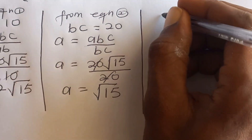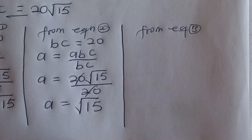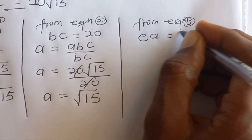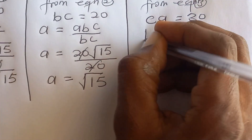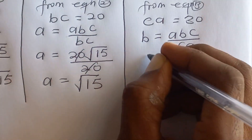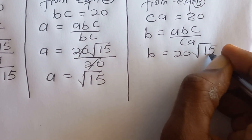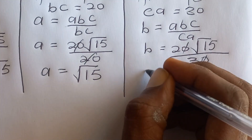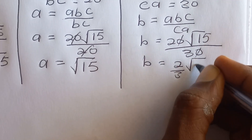From equation 3, which is ca equals 30, we find b. We say b equals abc divided by ca, so b equals 20√15 divided by 30, which gives us b equals (2/3)√15.